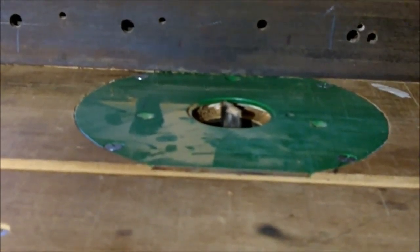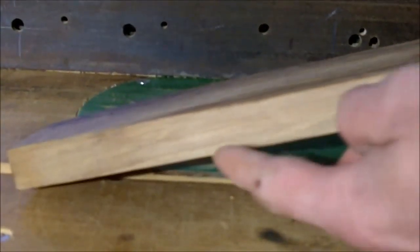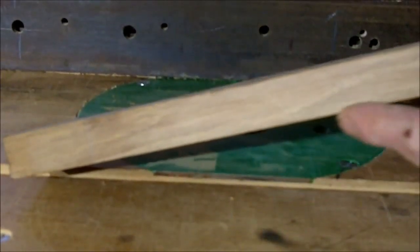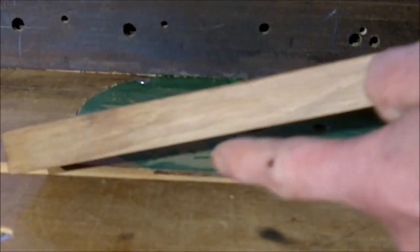Here you see the router cutter and my piece of oak. This is one of the stiles. This is the edge I will cut the stopped rebate in.